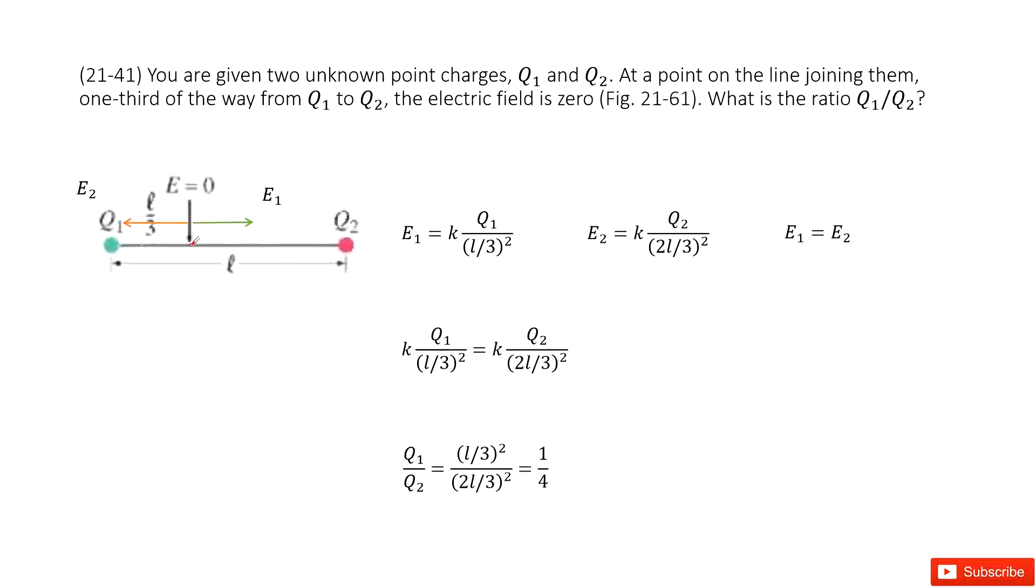...the electric field is zero, so we need to determine the ratio q1 to q2. The distance from this point to q1 is l divided by 3, and the distance from the point to q2 is 2 over 3 l.